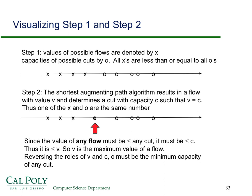This is easy to understand with a picture. Step one says all flows (x's) must be less than or equal to any cut capacity (o's). Step two says the shortest augmenting path algorithm finds a flow and a cut where x equals o. Because of that, all other flows must be less than x, so x is a max flow, and all other cuts must be bigger than that x, so this is the minimum cut.